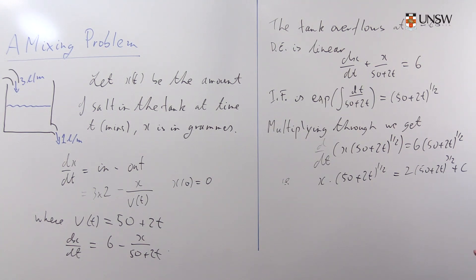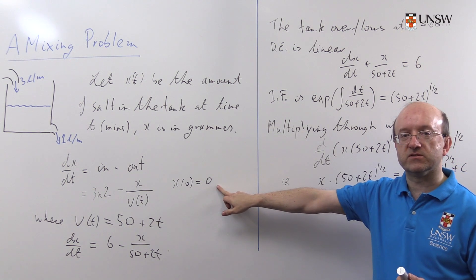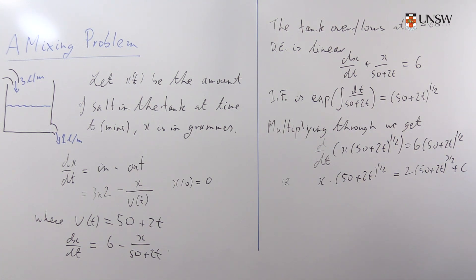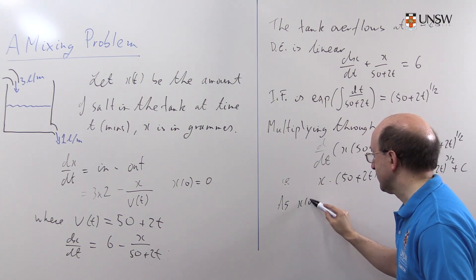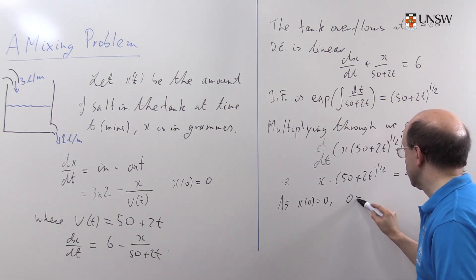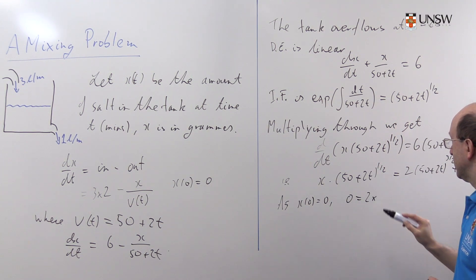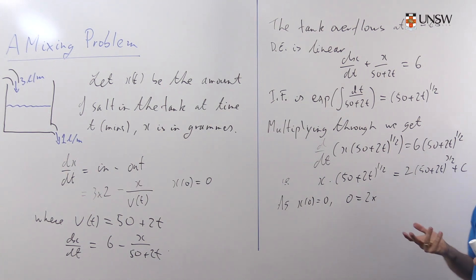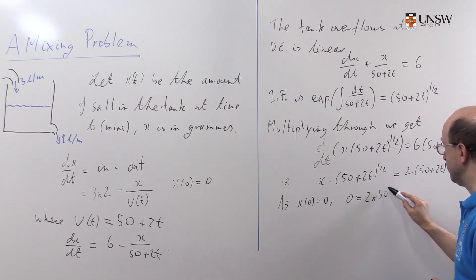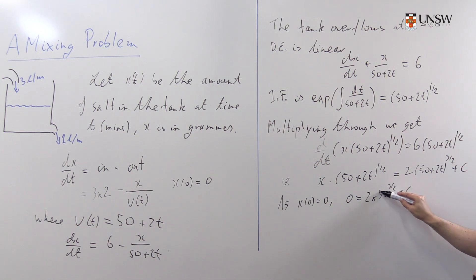It's an initial value problem though, so we need to work out what C is. Well, our initial value is that x of 0 is 0, so we put t equals 0 in here. This side will just be zero. On this side we'll get twice 50 to the 3/2 equals C. So as x(0) equals 0, we get 0 equals 2 times 50 to the 3/2... well, 50 is twice 25. And when we take 25 to the 3/2 we get... how do we get here? Well, let me just write that down that way: 50 to the 3/2 plus C. So that tells us the arbitrary constant is minus twice 50 to the 3/2.